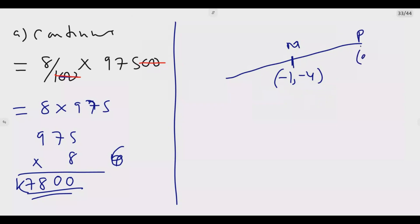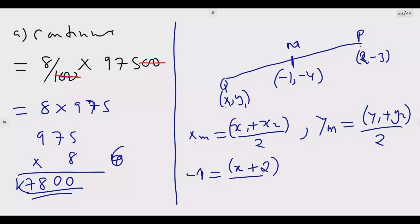That's what I'm looking for. So we use the midpoint formula. The midpoint formula is: the value of X at midpoint is equal to X1 plus X2 over 2. Then the Y midpoint is equal to Y1 plus Y2 over 2.